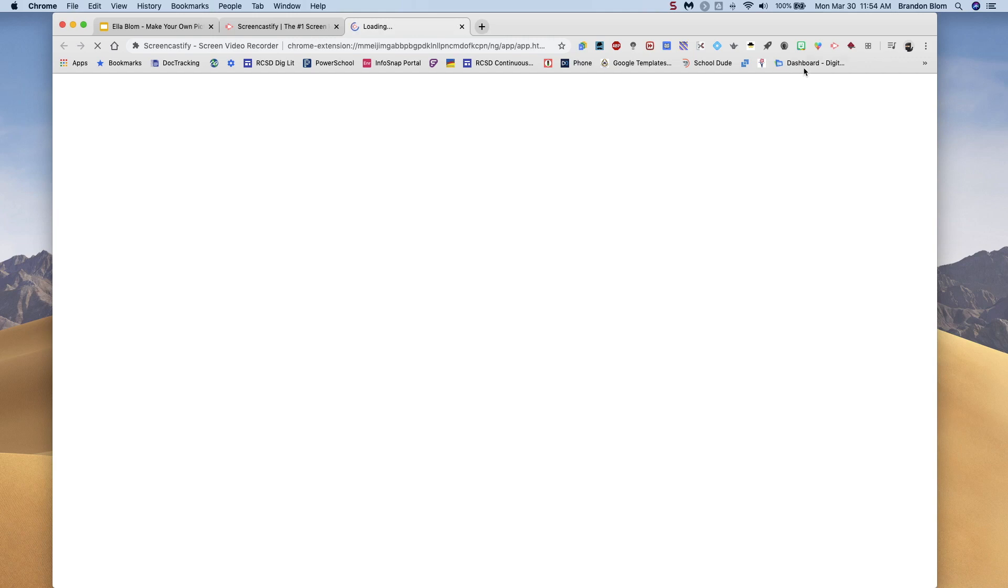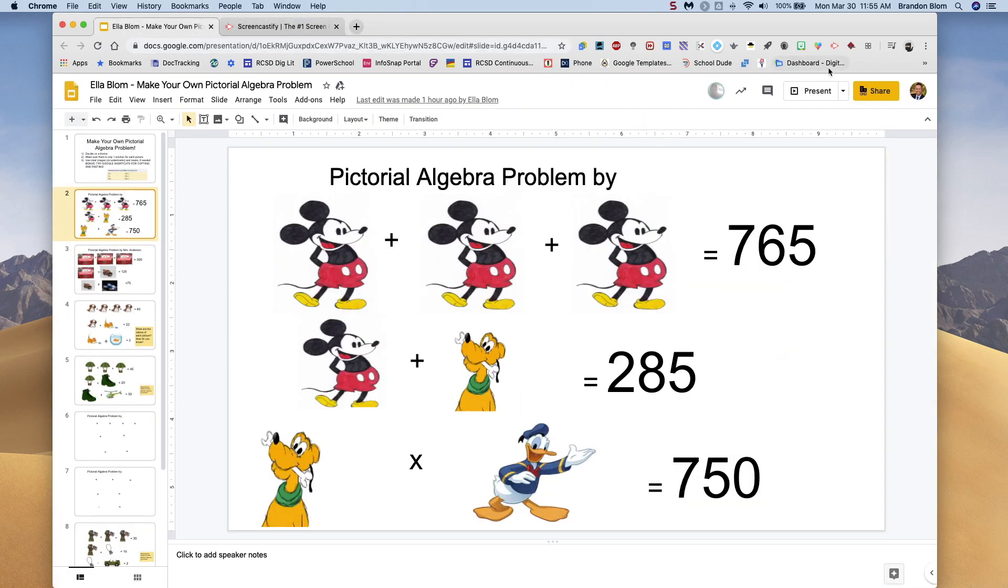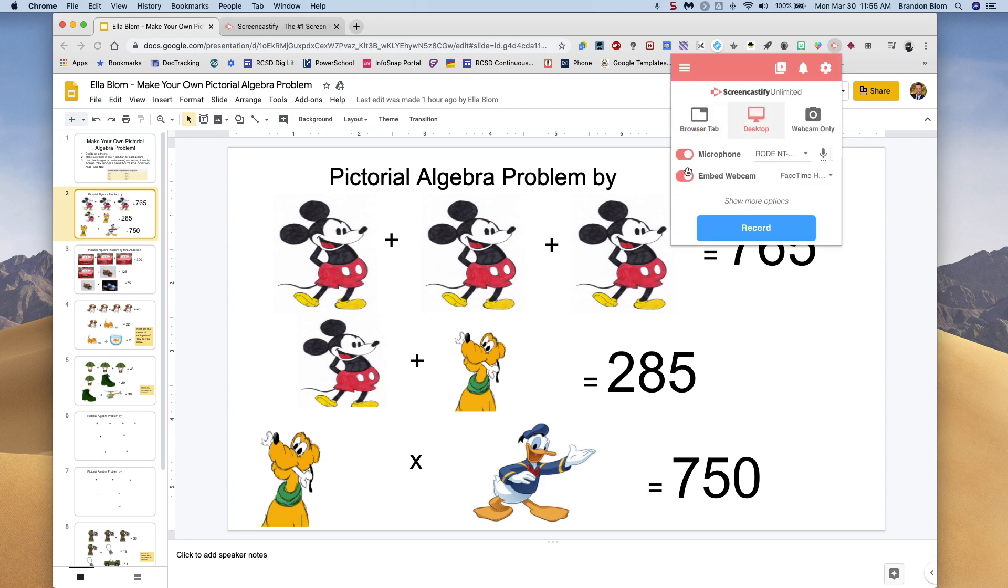And then the other option, if I just go up here and I want to record my voice, I can turn off Embedded Webcam. Then it just is talking over slides. So three different options: Webcam only so you just see your face, Desktop so your teacher can see what's on your desktop, or what's on your desktop and embed yourself talking.